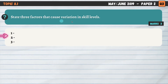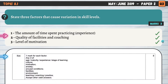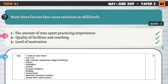Topic 8.1: state three factors that cause variation in skill levels. First, the amount of time spent practising — more practice leads to greater experience and skill. Second, the quality of facilities and coaching — great facilities and coaches help develop skill much better. Third, the level of motivation — elite performers are highly motivated because becoming a top performer takes enormous time and effort. Other valid answers include age, maturity, culture, anxiety, arousal, and environment.